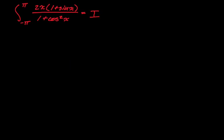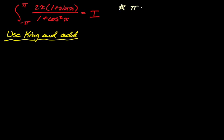For starters, you always want to let the whole integral equal I. What we're going to do is use King and add the two integrals that we get together. Remember when doing King, the substitution you make is a plus b minus x. So it's negative pi plus pi minus x, meaning we're going to replace every x with negative x, then add the two integrals together.